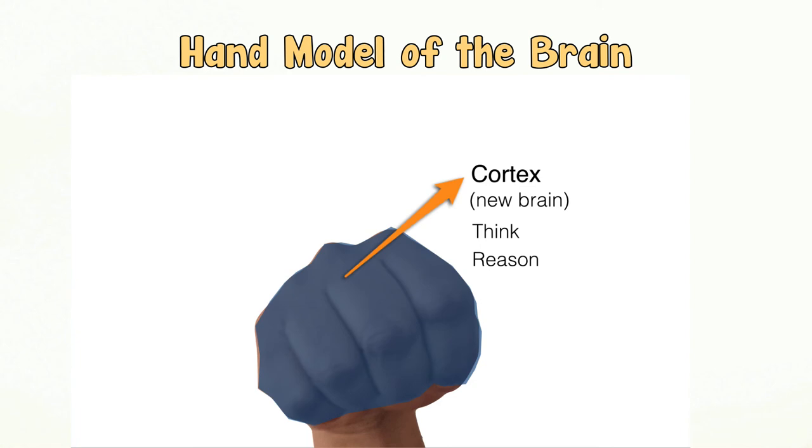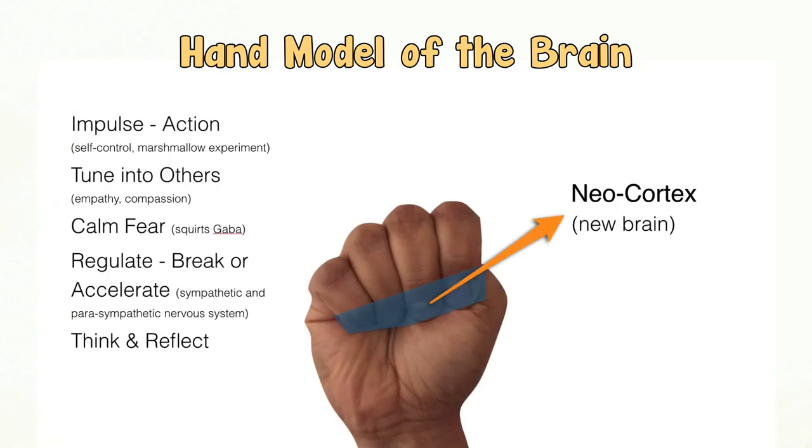Fold your fingers over your thumb and this region becomes the cerebral cortex or the new brain responsible for thinking and reasoning. Your nails are the neocortex region of your brain, the latest addition to this building and they are responsible for self-control, empathy, compassion, deep thinking and reflection.